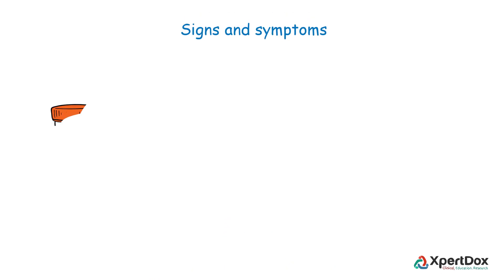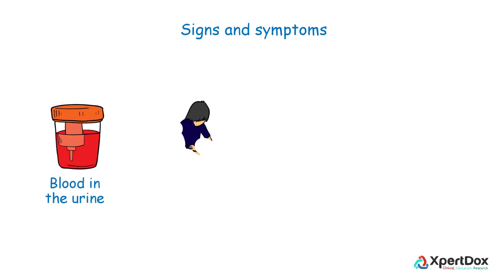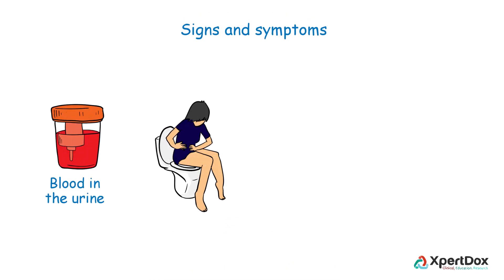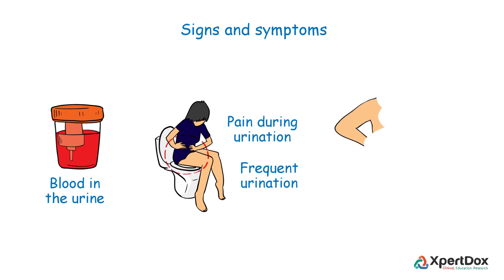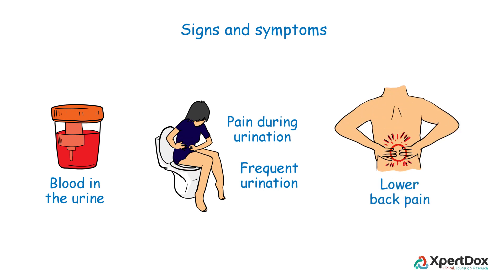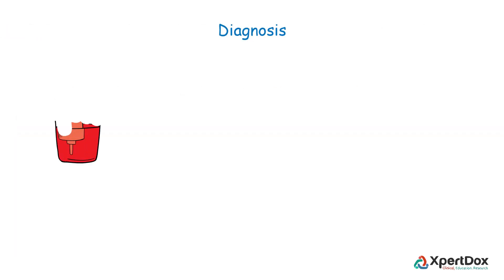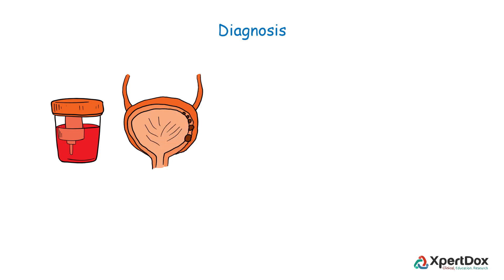Signs and symptoms of bladder cancer include blood in the urine, pain during urination, frequent urination, and lower back pain. Tests that examine the urine and bladder are used to diagnose bladder cancer.